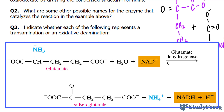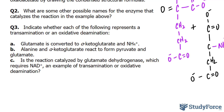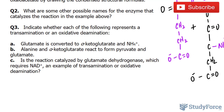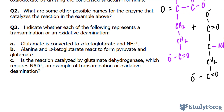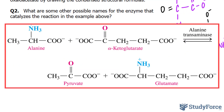The enzyme that catalyzes the oxidative deamination is glutamate dehydrogenase. The reaction is shown underneath — notice the reduction of NAD+ to NADH in the process. For part B, alanine and alpha-ketoglutarate react to form pyruvate and glutamate. This is a transamination reaction, because transamination occurs when an amino group is transferred from an amino acid to an alpha-ketoacid, such as alpha-ketoglutarate.